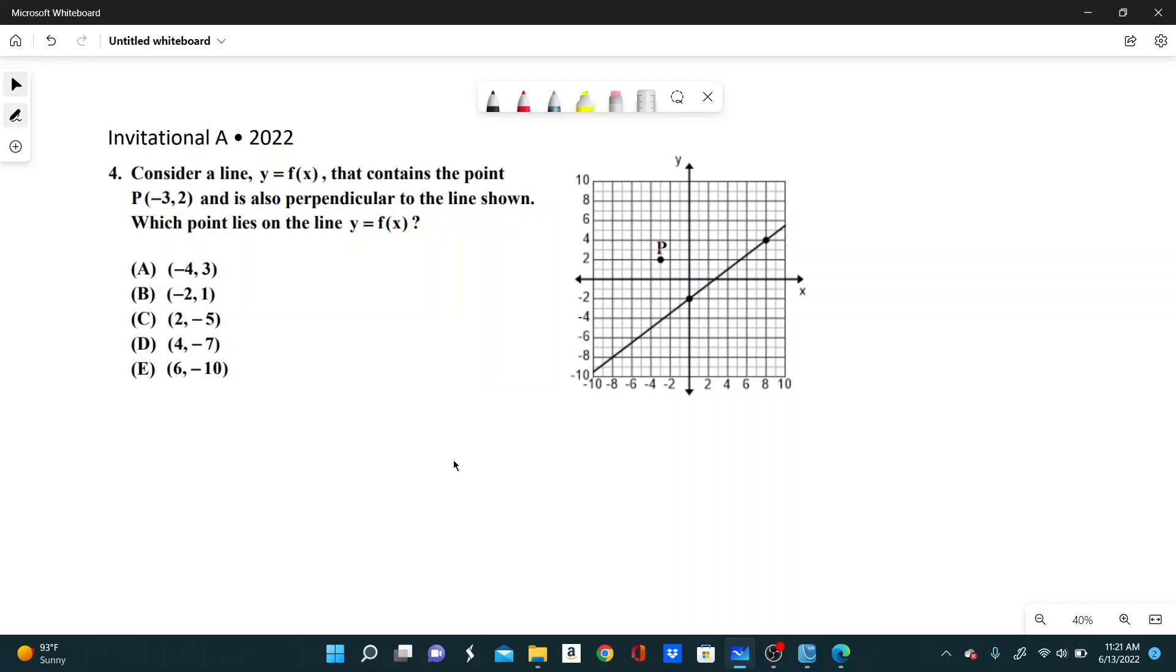We first have to find the line y equals f of x. The way we can do that is using the point-slope equation. We know that this line goes through point P and has a slope perpendicular to this line. So we can first find the slope of this line.